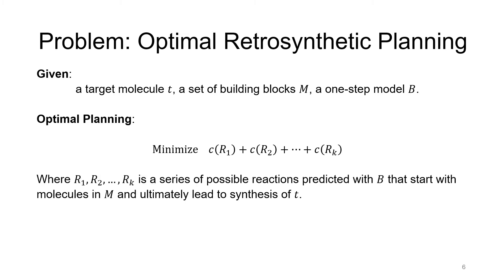The optimal retrosynthetic planning problem is defined as follows. Given the target molecule T, a set of building block molecules M, and a one-step model B, the optimal planning problem is trying to minimize the sum of costs of all the reactions from R1 to RK, where R1 to RK is a series of possible reactions predicted with B that start with molecules in M and ultimately lead to the synthesis of T. Note that here we also consider the practical time constraint, which is the number of calls to the one-step model B should be limited.